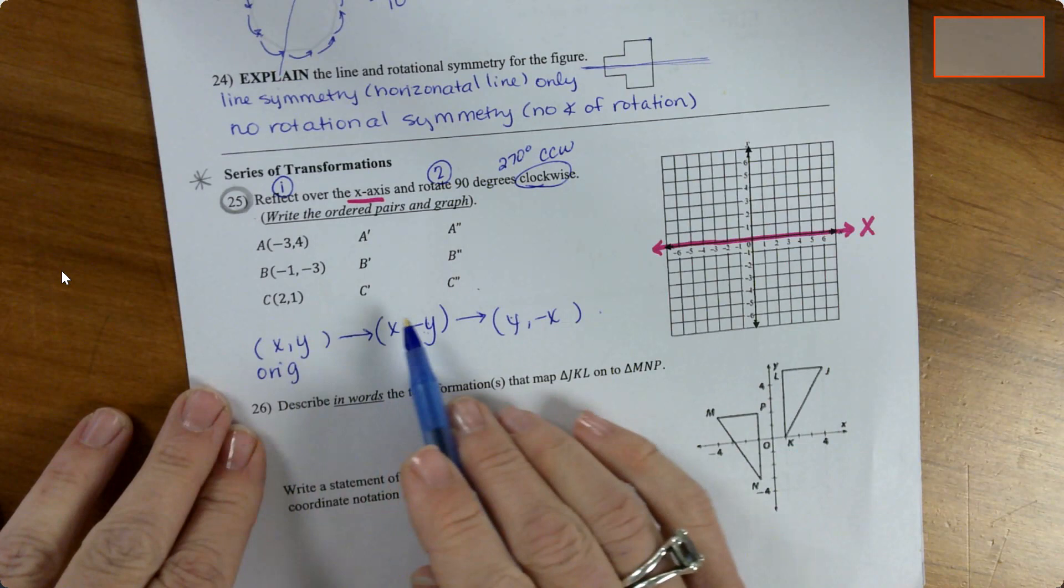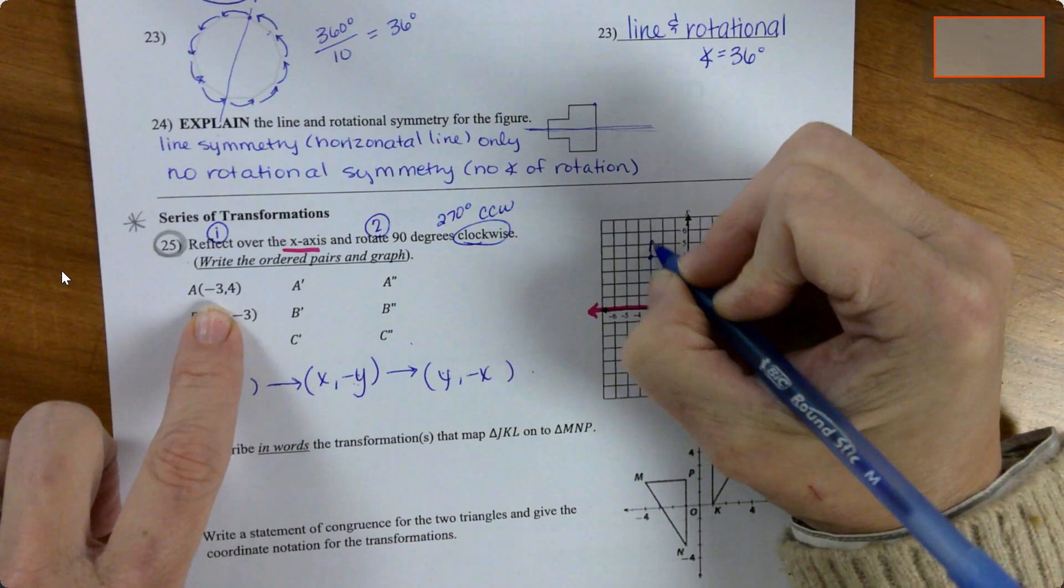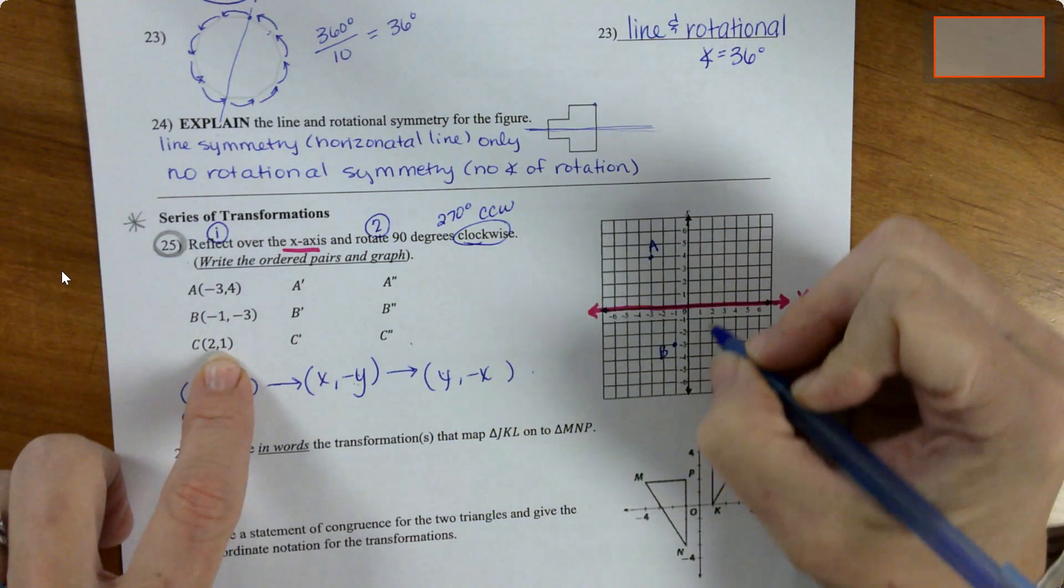So negative 3, 4, this is A. Negative 1, negative 3, this is B. And 2, 1, this is C. And I'm gonna very quickly draw the original triangle.